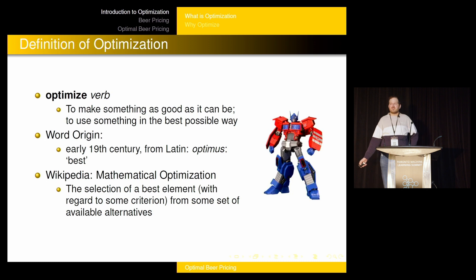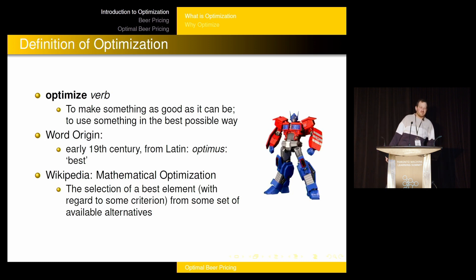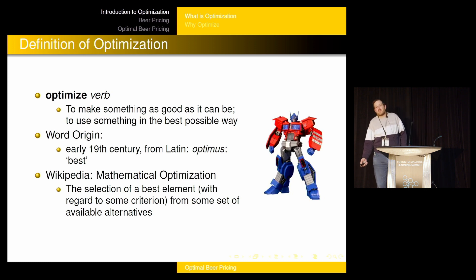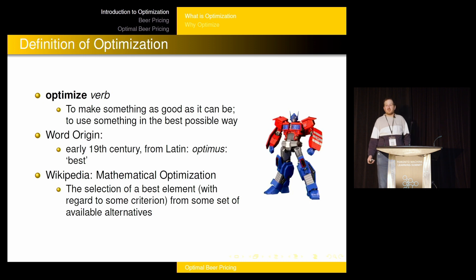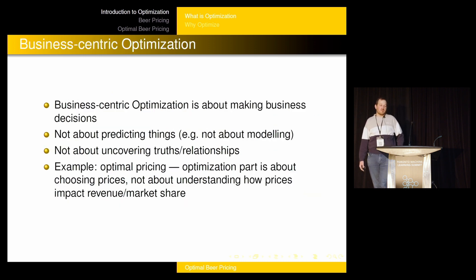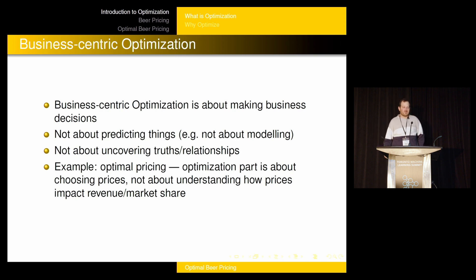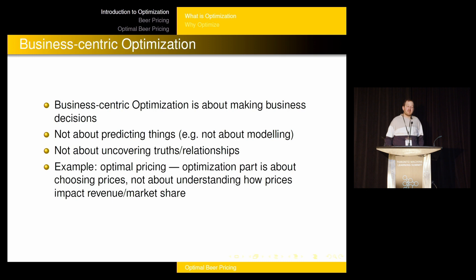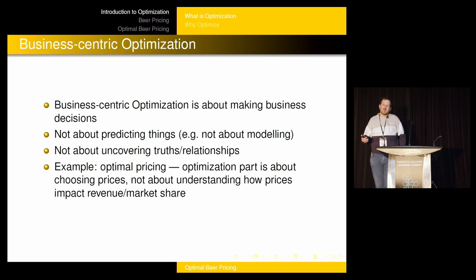If you look up mathematical optimization on Wikipedia, you'll get a definition like: it's a selection of the best element with regard to some criteria from a set of available alternatives. But that's not really telling you what optimization is in a business context. Business-centric optimization is about making business decisions — it's not about predicting things, not about modeling, not about uncovering truths or relationships.